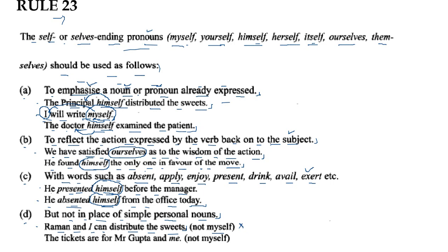Second example: 'The tickets are for Mr. Gupta and me' — this is the correct form. Saying 'The tickets are for Mr. Gupta and myself' would be wrong, because Mr. Gupta and me is a simple personal noun and pronoun, and with them you don't use a reflexive pronoun.